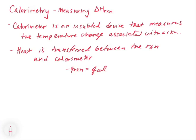By having the calorimeter be insulated, we can assume that all of the heat of the reaction is transferred directly to or from the calorimeter. This is called the general calorimeter equation, where we say minus Q of the reaction is equal to Q of the calorimeter. It doesn't matter which side you put the minus sign on, because whatever the calorimeter loses, the reaction has gained, and whatever the reaction loses, the calorimeter has gained.